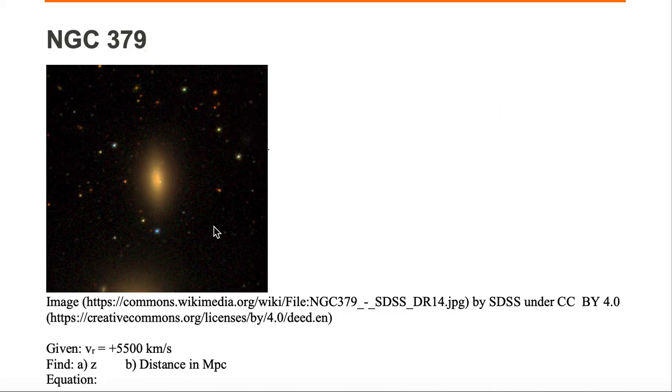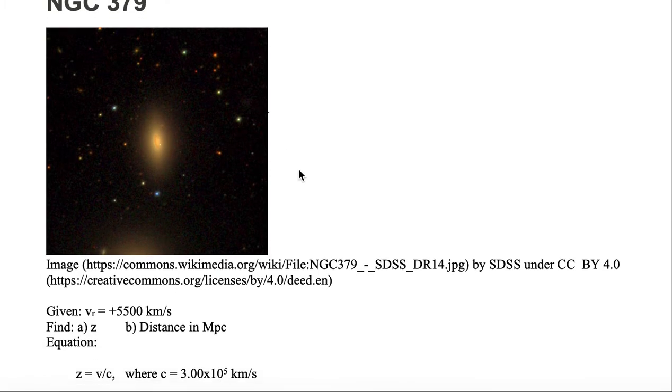This object was observed with the Sloan Digital Sky Survey, and we're looking at it in visible or optical light. We're given that the radial velocity of this galaxy is positive 5,500 km per second. Because it is positive, we have a redshift. This galaxy is moving away from us at a speed of 5,500 km per second.